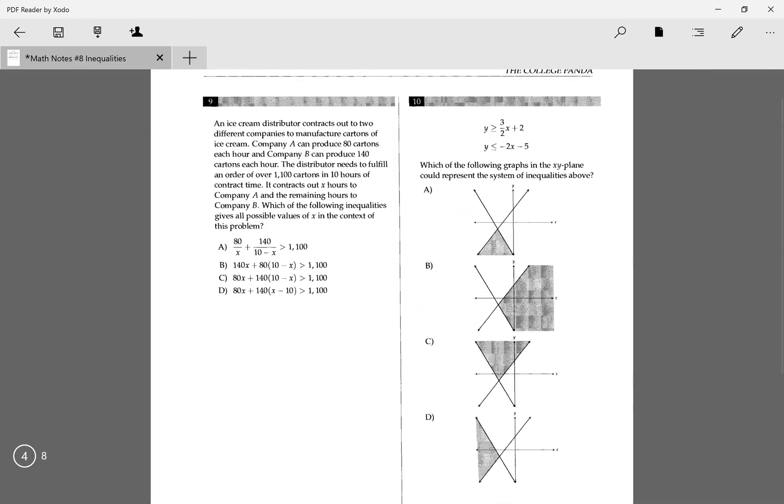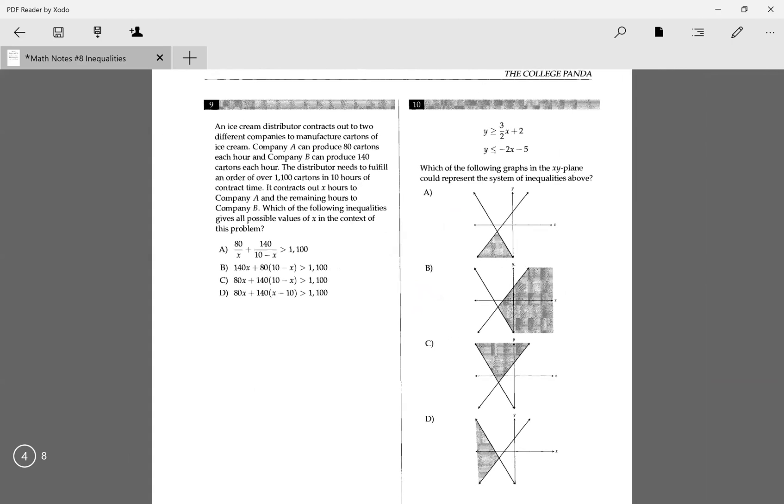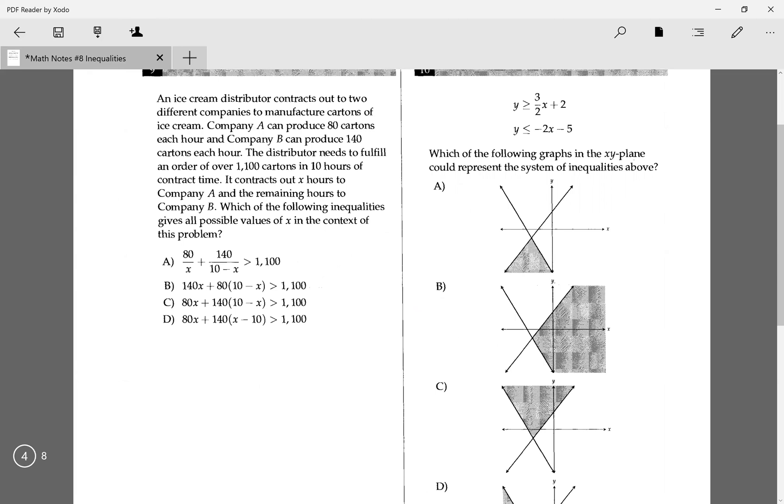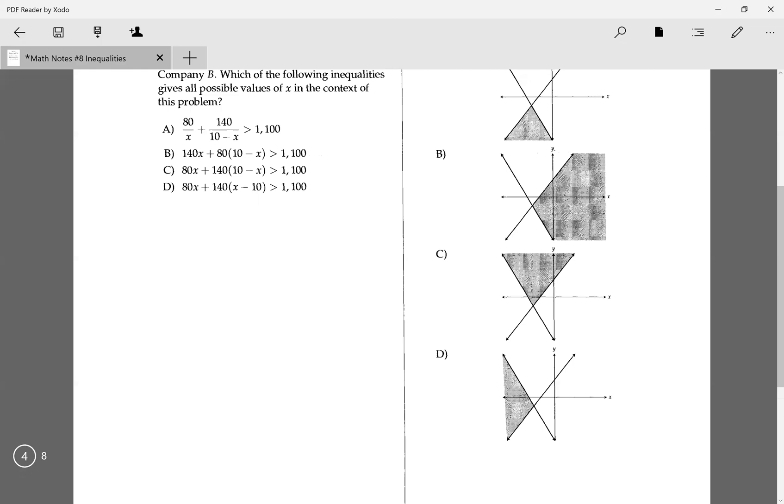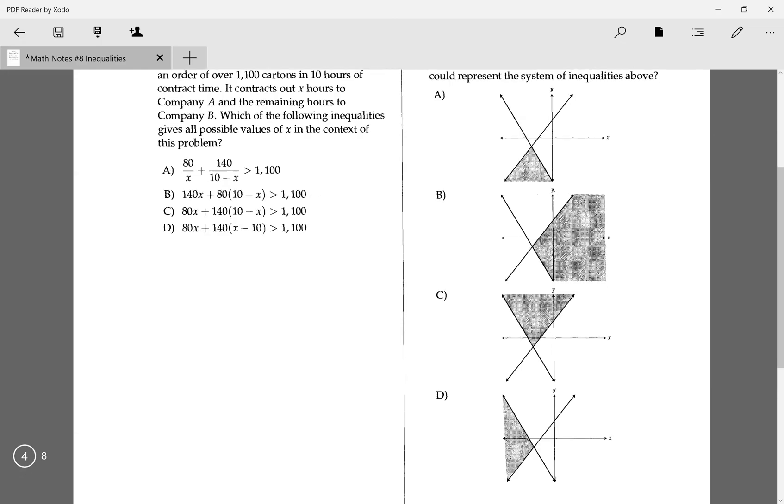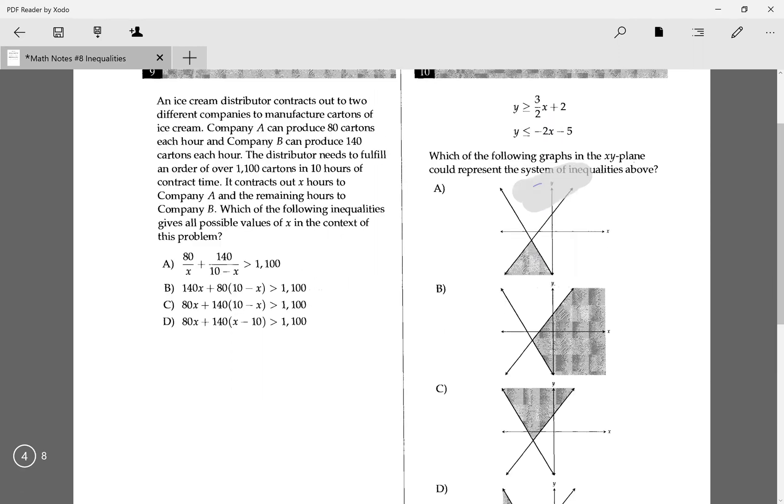Number 10: which of the following graphs in the xy plane could represent the system of inequalities above. We have two inequalities right here, and I want to find which of these graphs would best represent it. In this case, I would first see which, I see that for all four of these, the lines are the exact same, which is which of these four regions is shaded. First, I want to think to myself which one of these is the thing. First, I would sketch this out real quick. It could be a rough sketch, because you don't have to have it exactly precise.